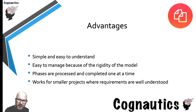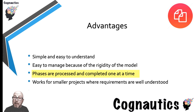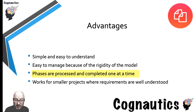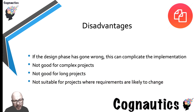Let's look at the advantages of the waterfall method. It's easy to understand and simple — the model is so rigid that you know up front exactly what you'll have to do, which is why it works when you already know everything up front. The phases are processed and completed one at a time, so for a project manager it's very easy to know where your different teams should be. Think about FIFA: there'll be a team for graphics, one for new players, one for scoring, one for menu systems — you'd know exactly where each team was at any given time.